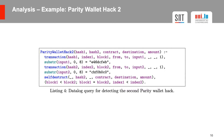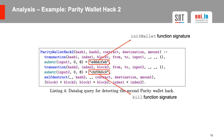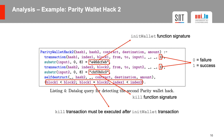Here you can see an example of a datalog query to detect the second Parity wallet hack. We first check if there are two transactions: one that calls the init wallet function and another that calls the kill function. Afterwards we check if both transactions were successful, and finally we verify the order by checking if the block number of the second transaction is larger than the first, or in case both are in the same block, if the transaction index of the second is larger than the first.